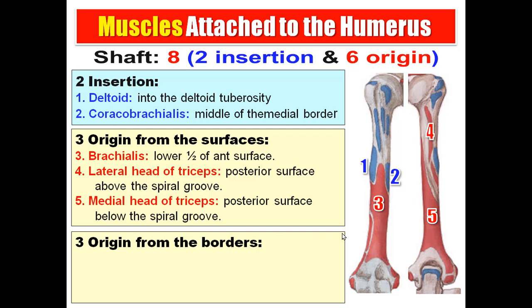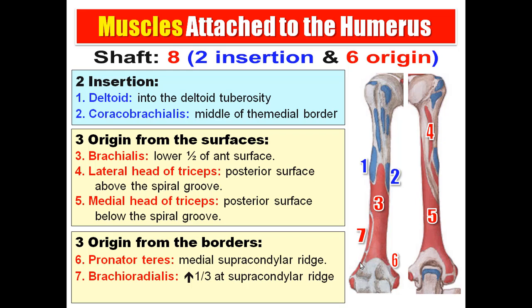Three origins from the borders: pronator teres from the medial supracondylar ridge; brachioradialis from the upper one-third of the lateral supracondylar ridge; and extensor carpi radialis longus from the lateral supracondylar ridge. So in total, eight muscles are attached to the shaft — two insertions (deltoid and coracobrachialis) and six origins (three from surfaces, three from borders).